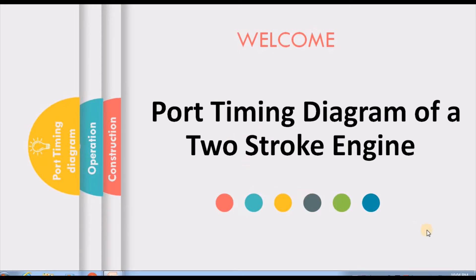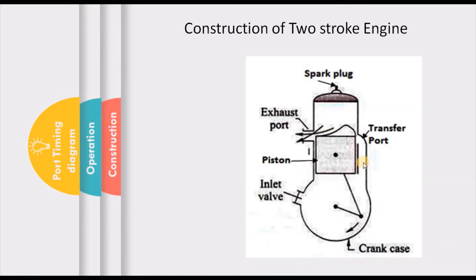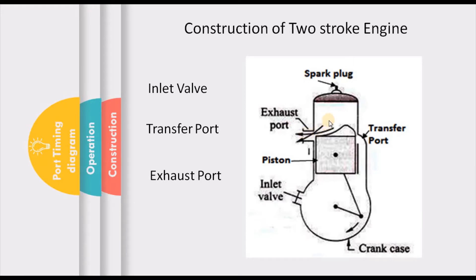A two-stroke engine has what we call an inlet valve, which allows the mixture to come in. This happens when the piston is moving up and a negative pressure is created inside the crankcase, creating a pressure difference between the inside and the outside atmosphere, which makes the mixture flow in. The mixture comes into the crankcase, then through the transfer port it moves to the combustion chamber. When the exhaust port is open, the mixture exits from the combustion chamber.